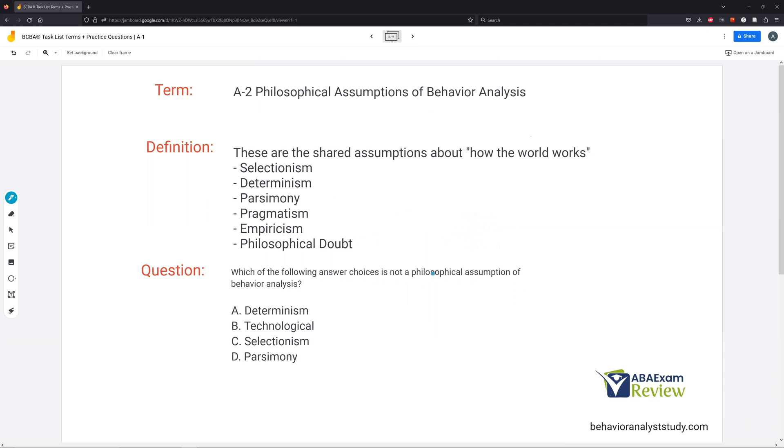Question, which of the following answer choices is not a philosophical assumption of behavior analysis? All right, so we're looking for what is not an assumption. And on the exam, you have all these different kind of groupings, right? We have our dimensions, our assumptions, what makes data good, what's our baseline logic, what are our goals of science, all these little groupings of terms that you kind of have to keep straight. So if asked a question like this, what is not a philosophical assumption, you have to know what are our assumptions. We know determinism, selectionism, and parsimony are, so we would obviously not choose those. The one we would choose is technological, because technological is going to be a dimension, one of our dimensions of ABA.